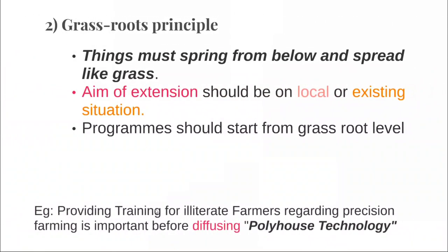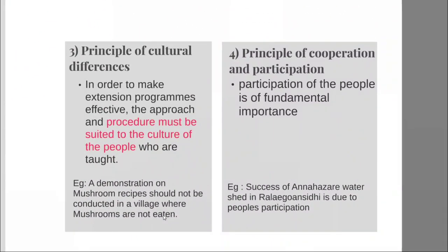Extension program should start from the grassroot level. The aim of extension should be aligned with the local or existing situation. Before launching or diffusing polyhouse technology to the farmers, we have to analyze the farmer's knowledge on precision farming. If they need any training or skill in precision farming, we have to address that first. Our extension work must be suitable to the culture of the farmers. For example, a demonstration on mushroom recipes should not be conducted in a village where eating mushrooms is considered a sin.